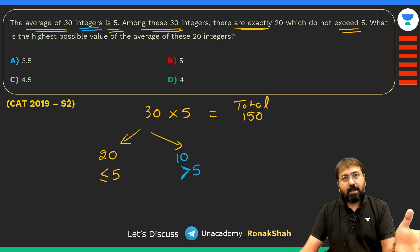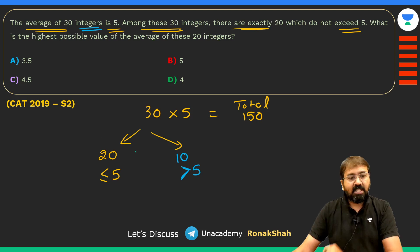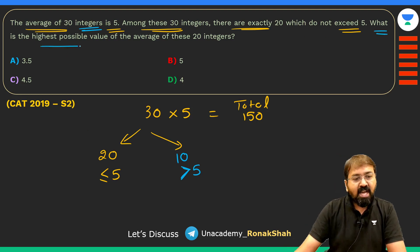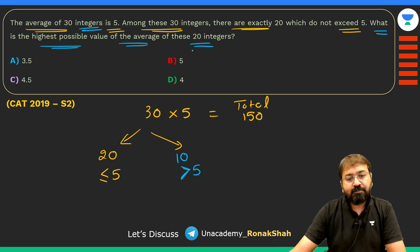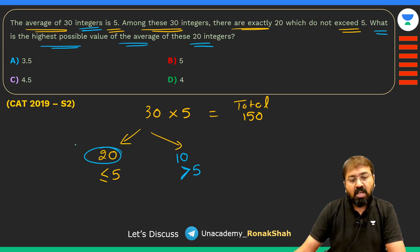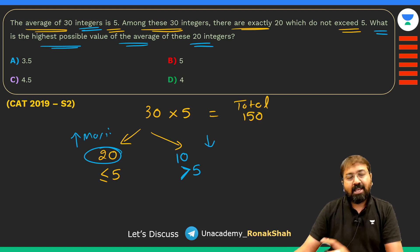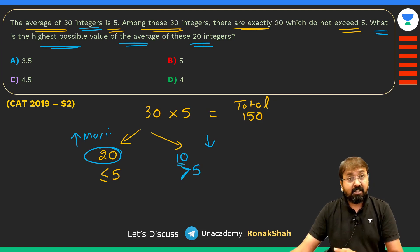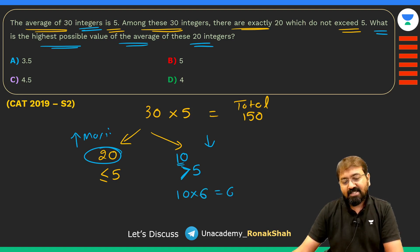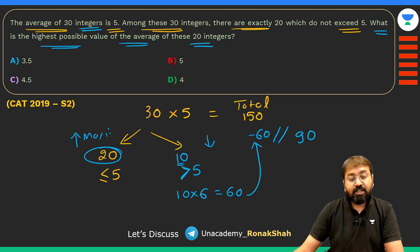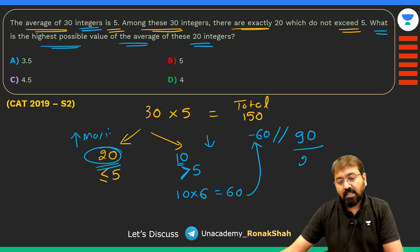Since the 10 integers greater than 5 must be integers, their minimum possible value is 6. To maximize the average of the 20 integers that are ≤5, we minimize the 10 integers that are >5 by assuming all of them equal 6. Their total is 10×6 = 60.